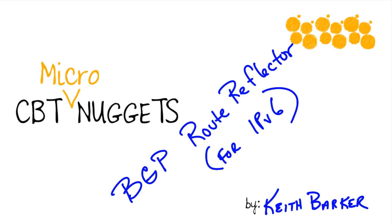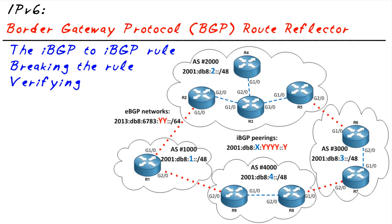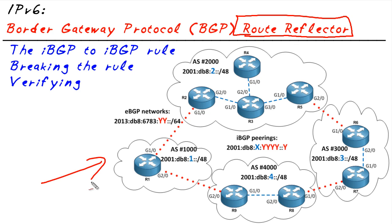Border Gateway Protocol route reflectors in IPv6 as well as IPv4 play an important role. In this micro nugget we're going to identify what that role is, how to configure and verify it. Our objective is to identify the benefits of using a route reflector inside of a BGP environment. The concept of a route reflector applies to both IPv4 and IPv6.